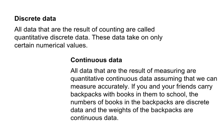Continuous data is something that flows, where you are allowed to have those intermediate values. For example, if you're putting gas in your car, you're not going to go from one gallon to two instantly — it slowly fills up from one all the way to two, getting every single value in between. So it's a continuous flow.